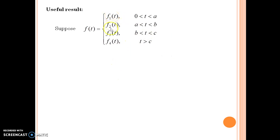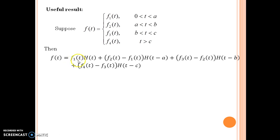What would we do is using Heaviside function we can express this entire function as f1(t) times H(t) plus (f2 - f1) times H(t-a).